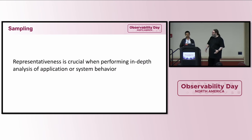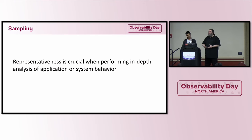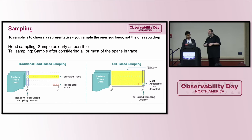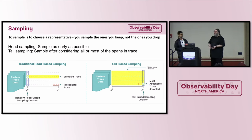Another way to process data moving through a collector — particularly if you're looking at reducing data without getting rid of useful information — is sampling. Key to sampling is identifying what are representative traces so that you can keep some but not all of them. If you want to do head sampling, shown on the left, you'll traditionally decide in your SDK, based on either attributes of the request or some percentage of data, to sample a trace and communicate that to all other things that participate in the trace. But you have to make that decision early on, before you know if it's going to be interesting or representative.